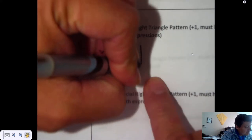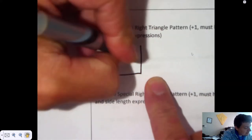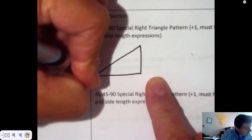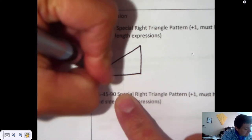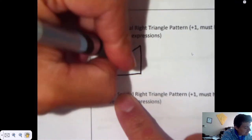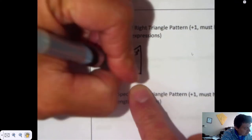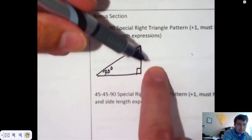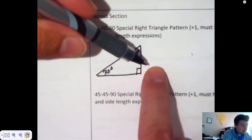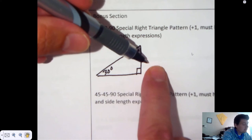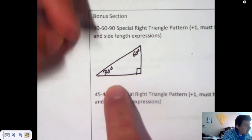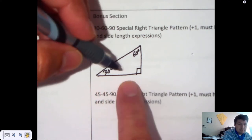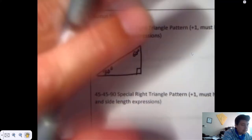One of them happens to be what we call a 30-60-90 pattern. Notice I drew the small angle opposite of the smaller side. That's how it works: small angle, small side. It's called hinge theorem, also in geometry.